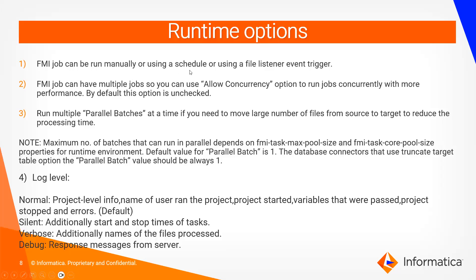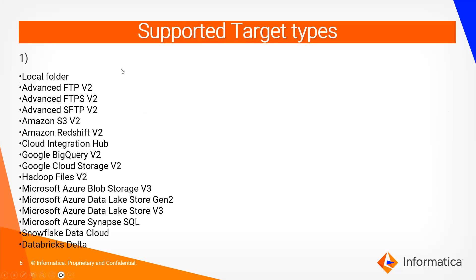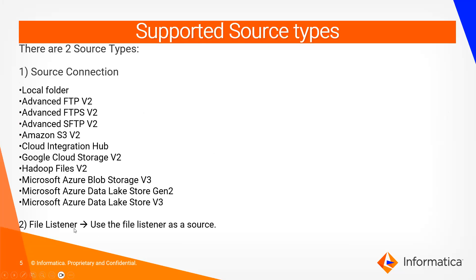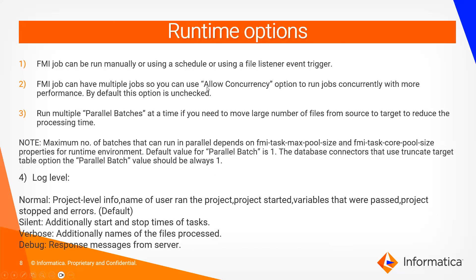For runtime options, an FMI job can be run manually, or you can use a schedule already present in IICS, or you can use a File Listener event trigger. When you use File Listener as the source, the File Listener option at runtime gets automatically selected — you don't need to manually select anything. Whenever a file event happens, the FMI job gets started.